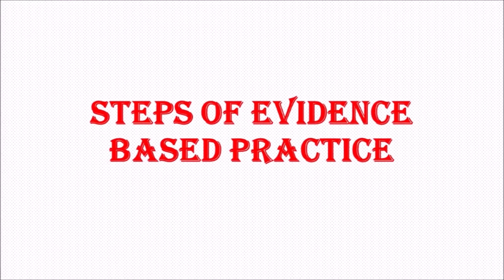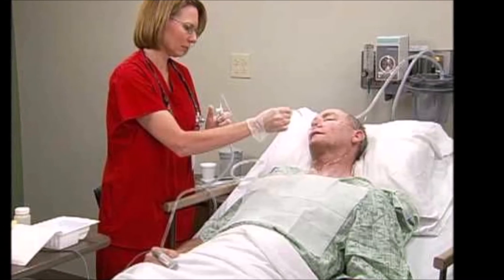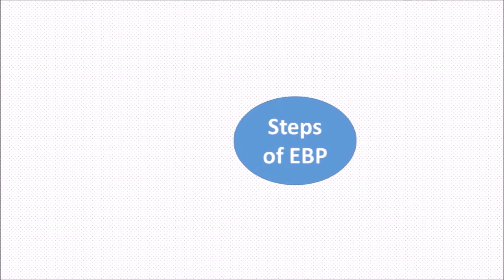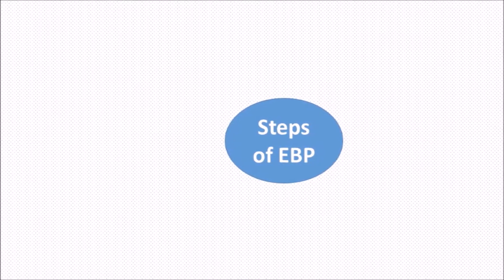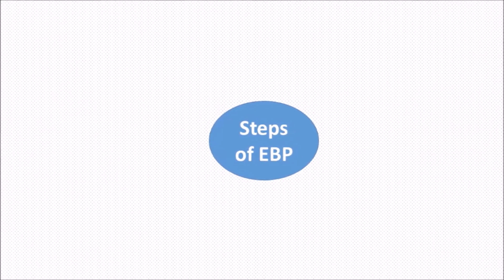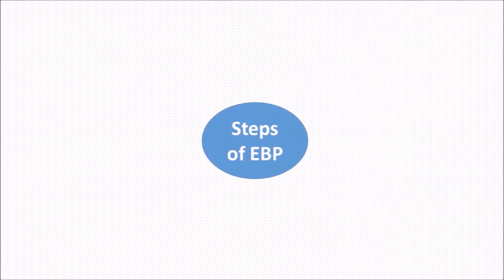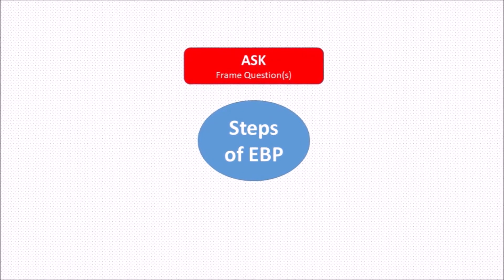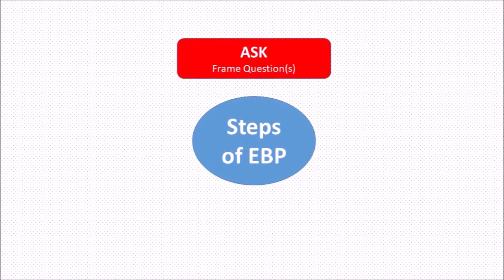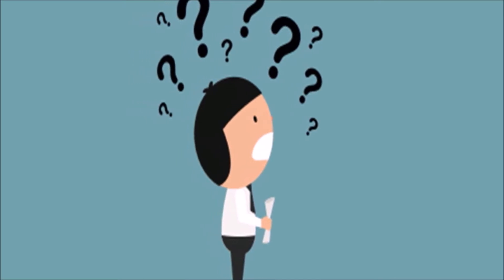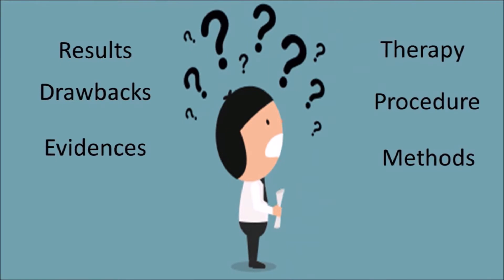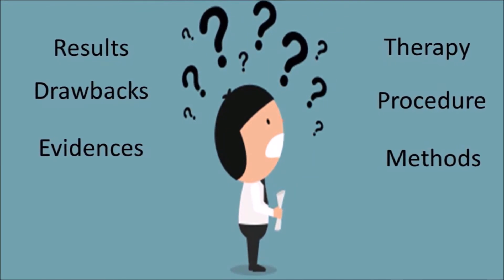If you need any evidence or proof to implement a procedure on a patient, then you need to follow certain steps to identify the evidence. Searching evidence for a particular procedure involves the following steps. The first step is to Ask — you need to ask questions to yourself, meaning you need to formulate questions regarding the therapy or procedure which you want to implement.